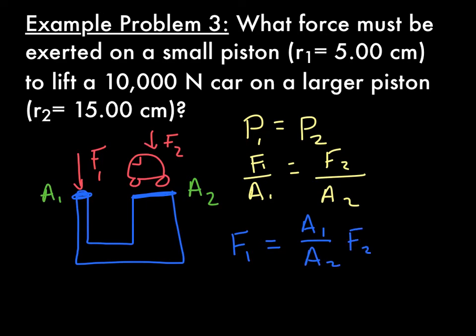Now we've got to make some rearrangements, so we'll get F1 equals—now these are circles, so this is going to be pi R1 squared over pi R2 squared times the force, which is 10,000 newtons. You'll notice that these two pi's cancel out. And if you calculate this, your force is going to be equal to about 1,100 newtons. And that's using Pascal's principle and why jacks work.